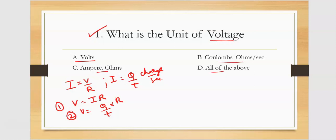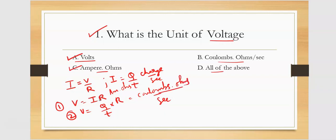Now it is easy to decide. V is the voltage. I is the amperes, V is voltage, R is the resistance. Q is charge and T is seconds. V equals I into R — ampere into ohms. Verify the second formula: Q divided by seconds into ohms — coulombs per second times ohms. So B option is also correct.